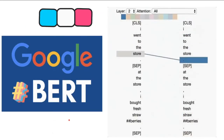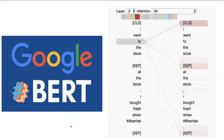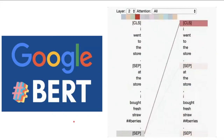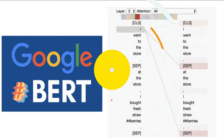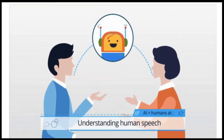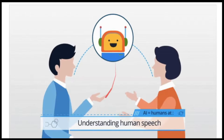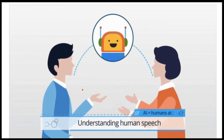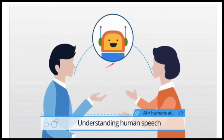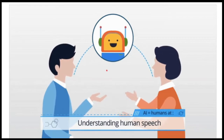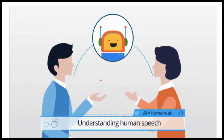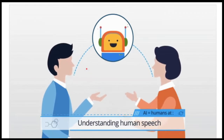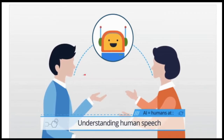Google BERT helps the Google search engine to understand the human language in a better way. It's very important for Google search engine to understand the human language and the expression. The more Google search engine understands our language, the better it can provide an appropriate response.